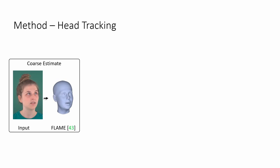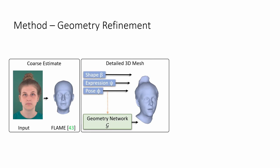This coarse head estimate is refined by a novel geometry network G, which adds facial detail and hair structure. A second feedforward network T synthesizes the appearance of the avatar by predicting a photorealistic texture.